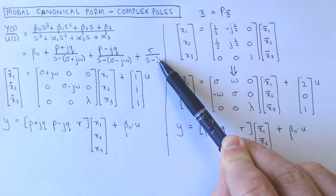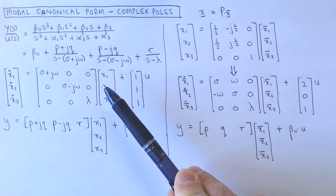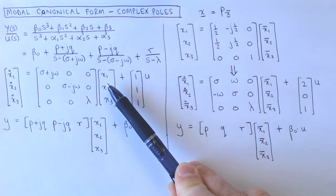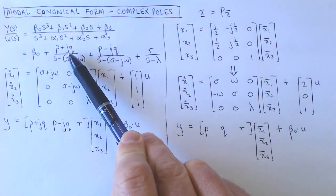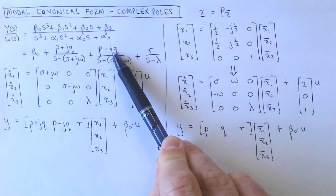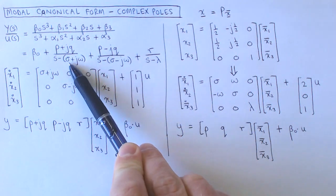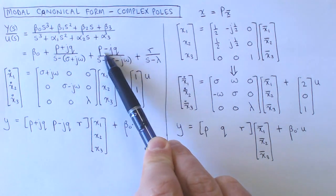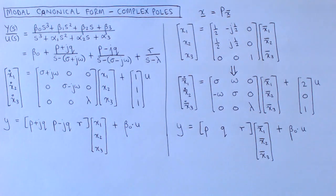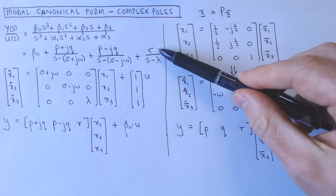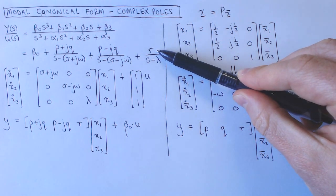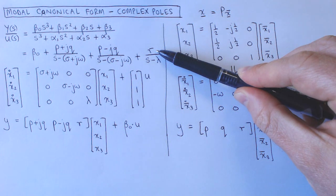The residuals corresponding to the complex poles are also complex, given by p plus jq and p minus jq. Note that the complex poles and the complex residuals are all complex conjugates of each other. The residual corresponding to the real pole is given by the real number r. By using the conversion techniques of the previous video, we can write down the modal canonical form as follows.